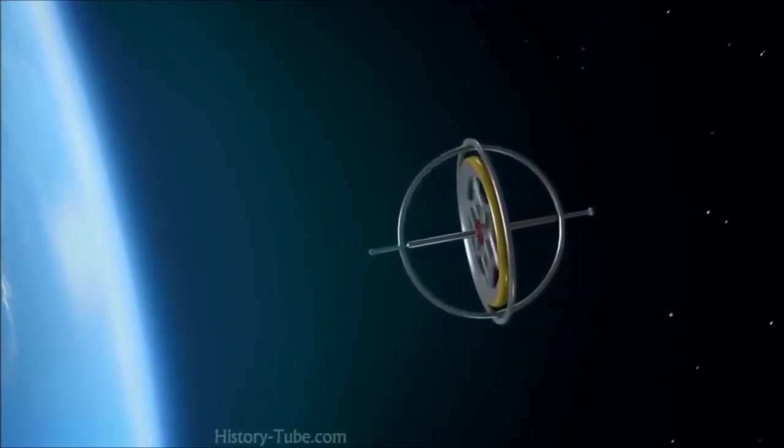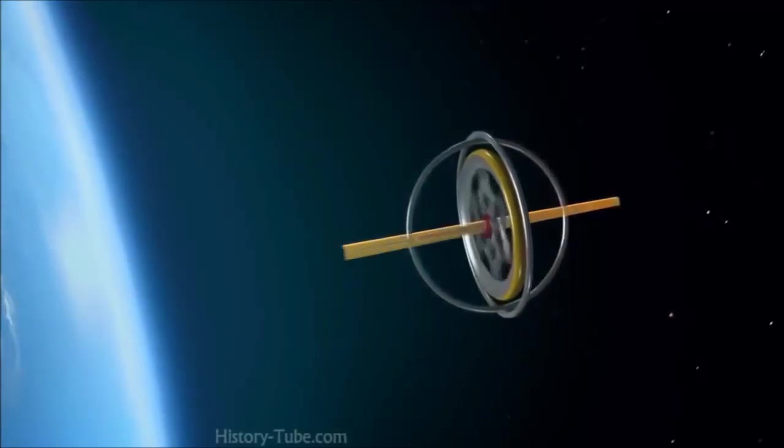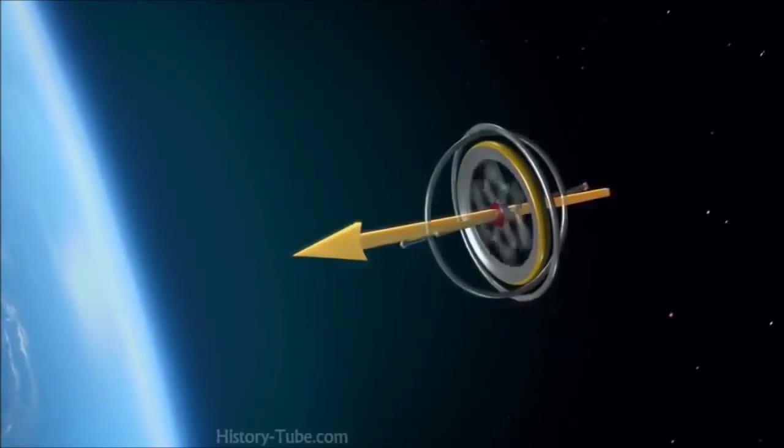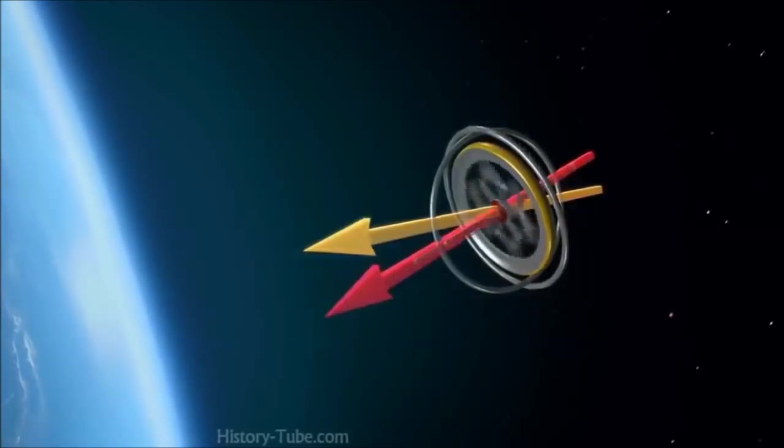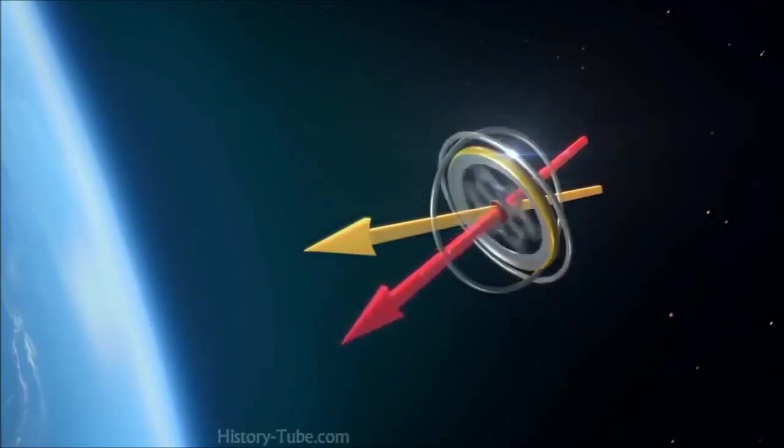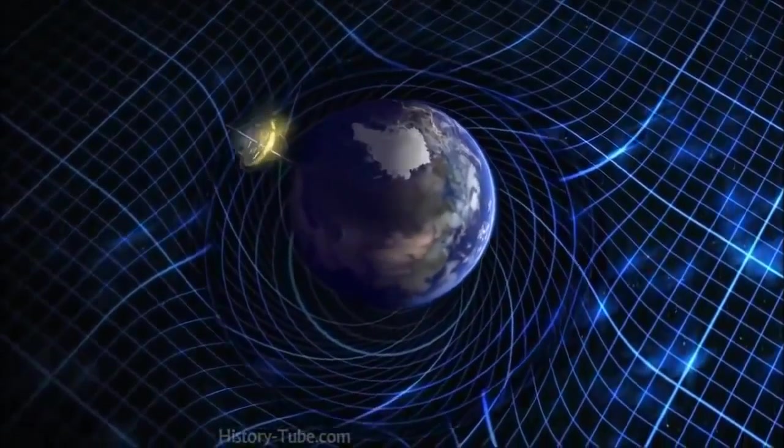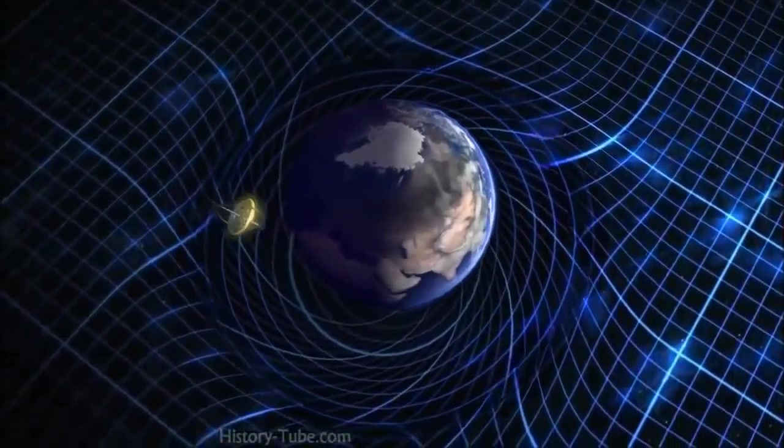Normally, a gyroscope's axis points in a fixed direction. But if Earth is actually dragging space, then the gyroscope's axis would be dragged along with it, shifting its orientation in a way that could be measured. It was a brilliantly simple plan. There was just one problem.